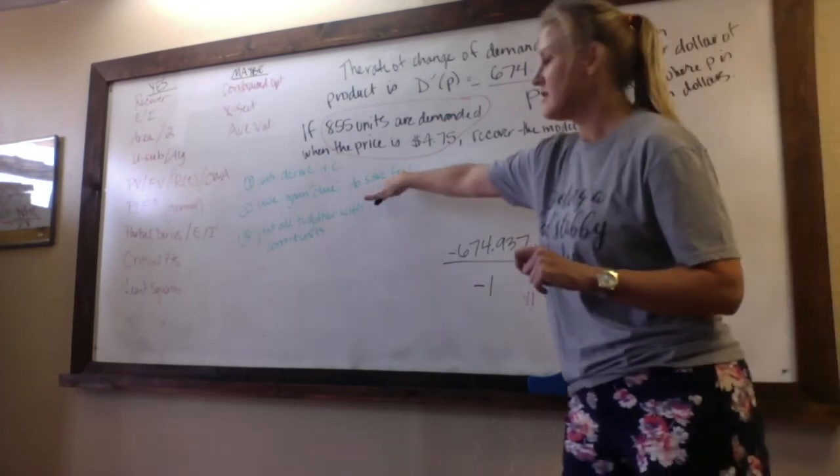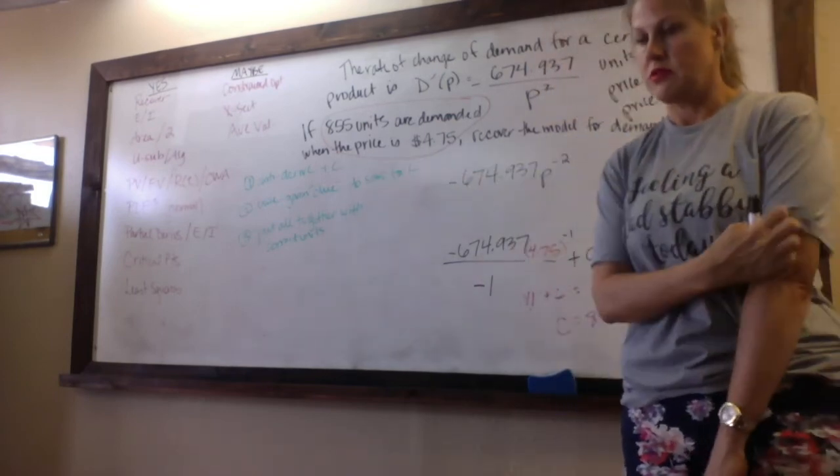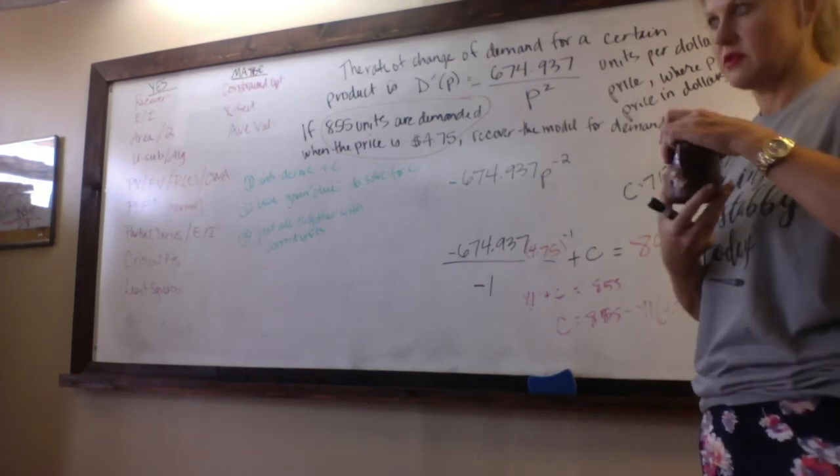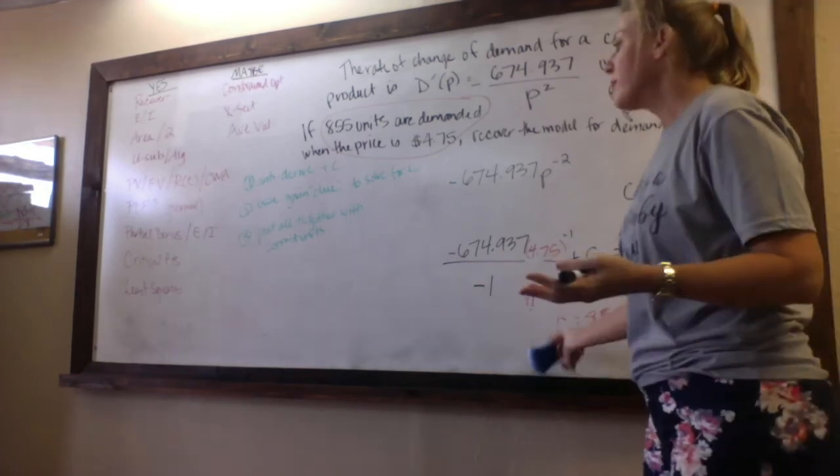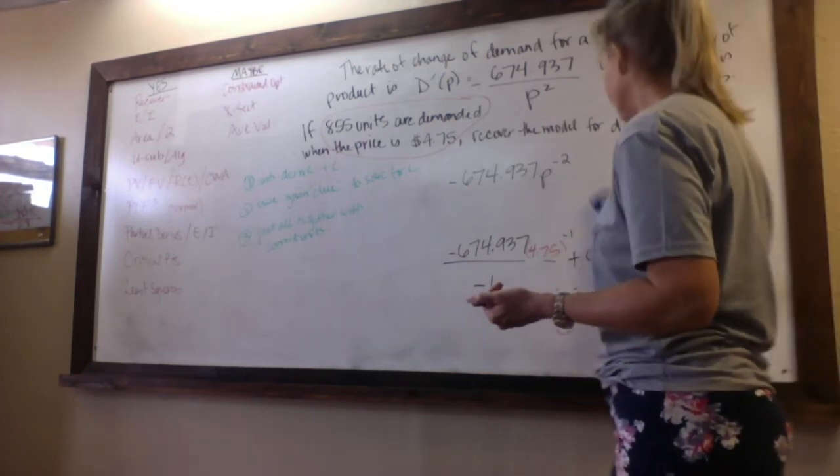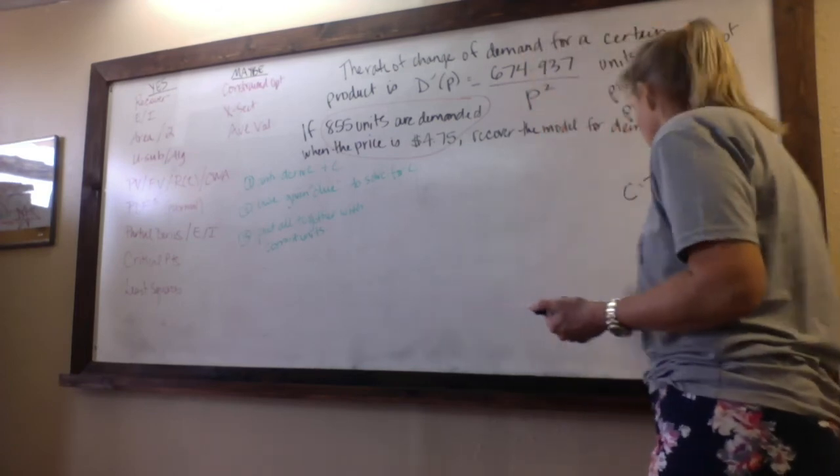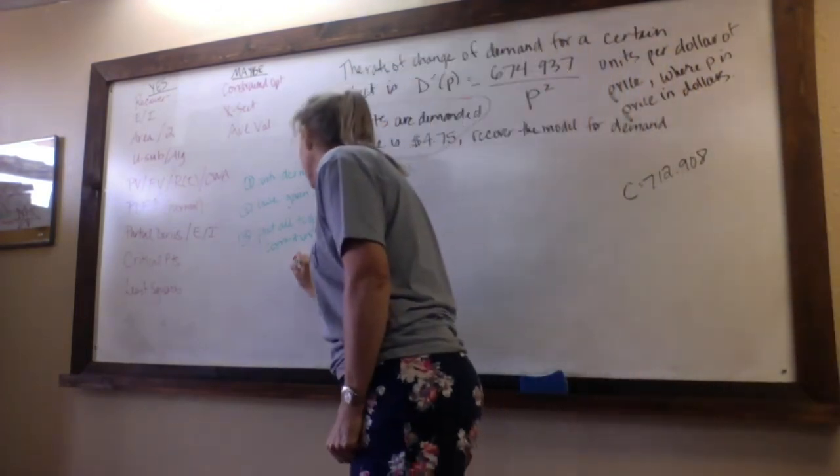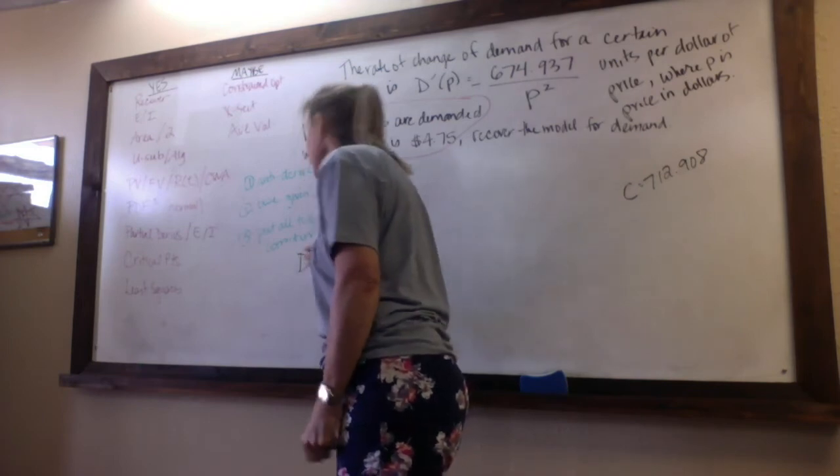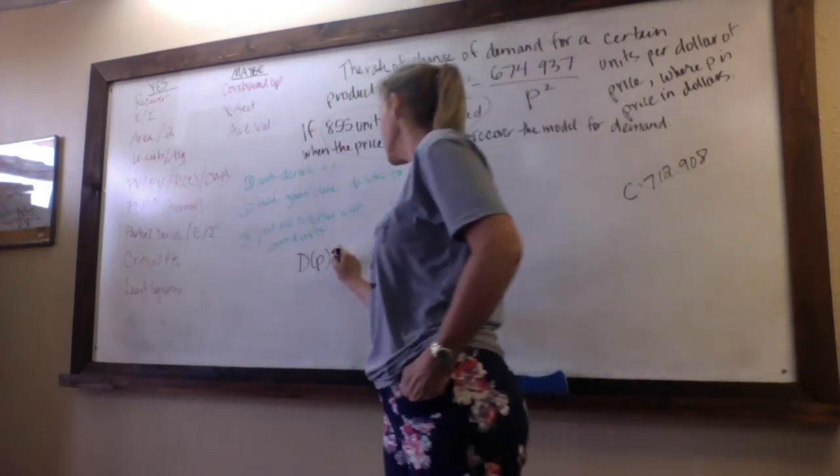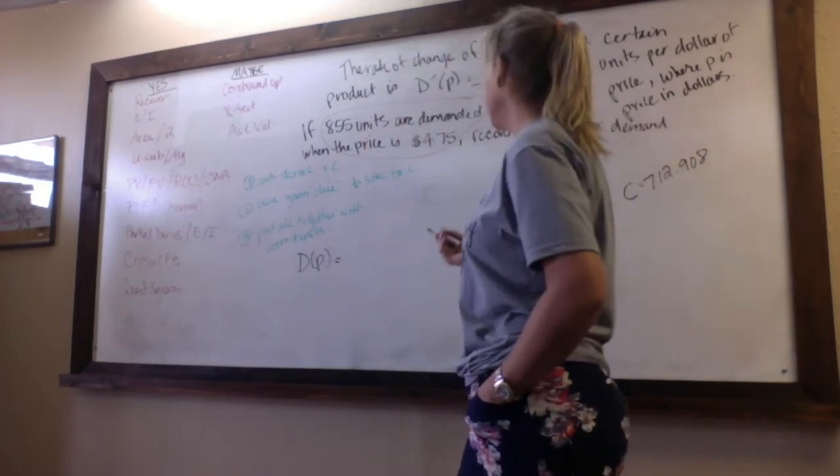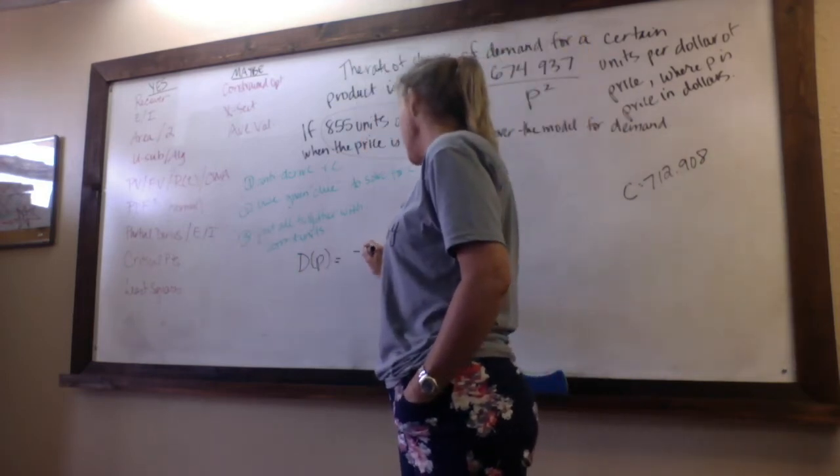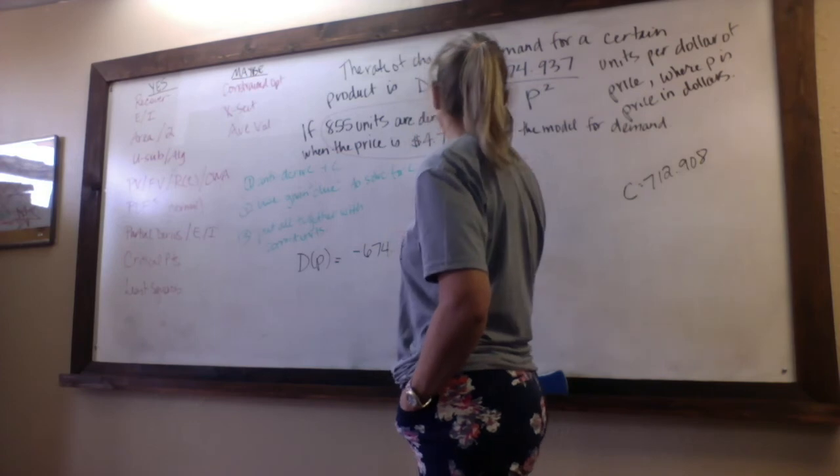So now we got to put it all together, correct name, correct units, everything. So the name of my new function is big D of P with no tick mark. Then I write the anti-derived function.